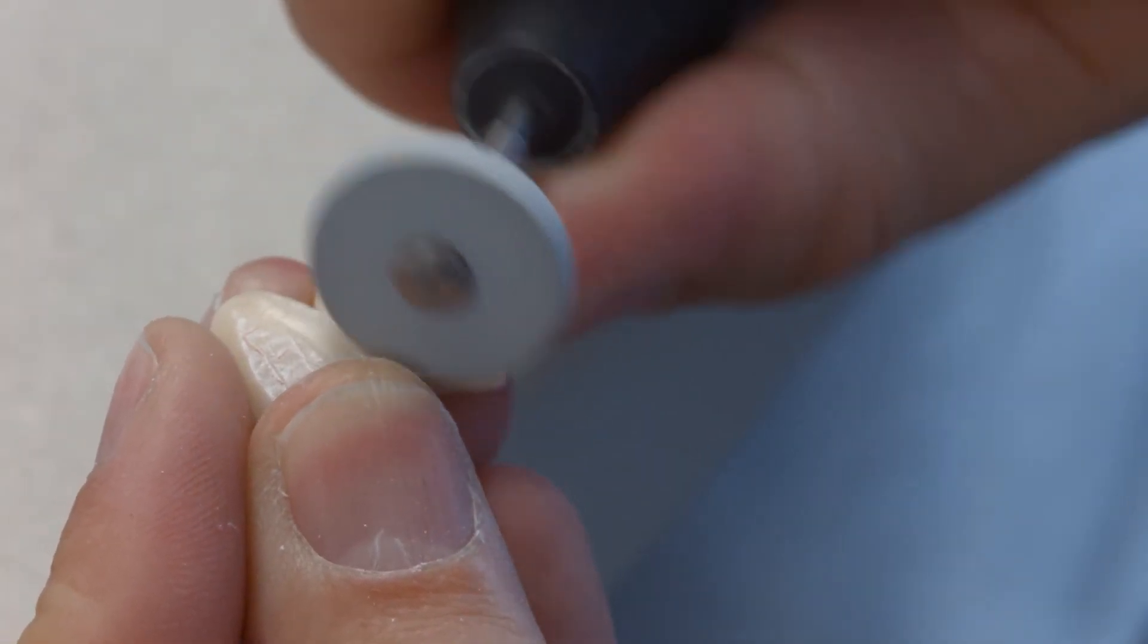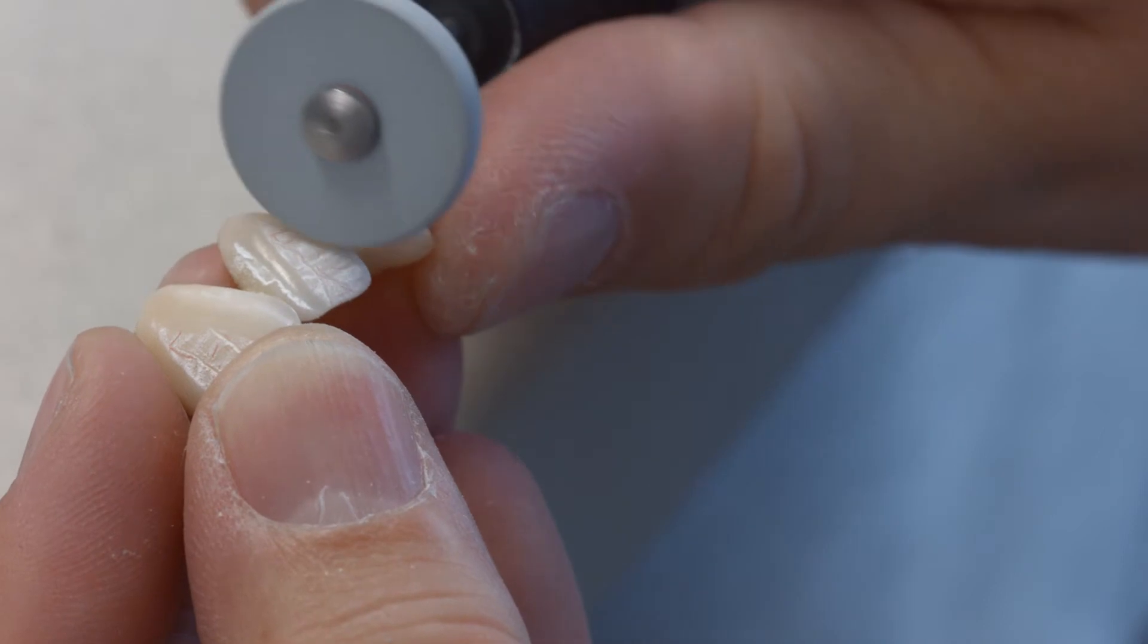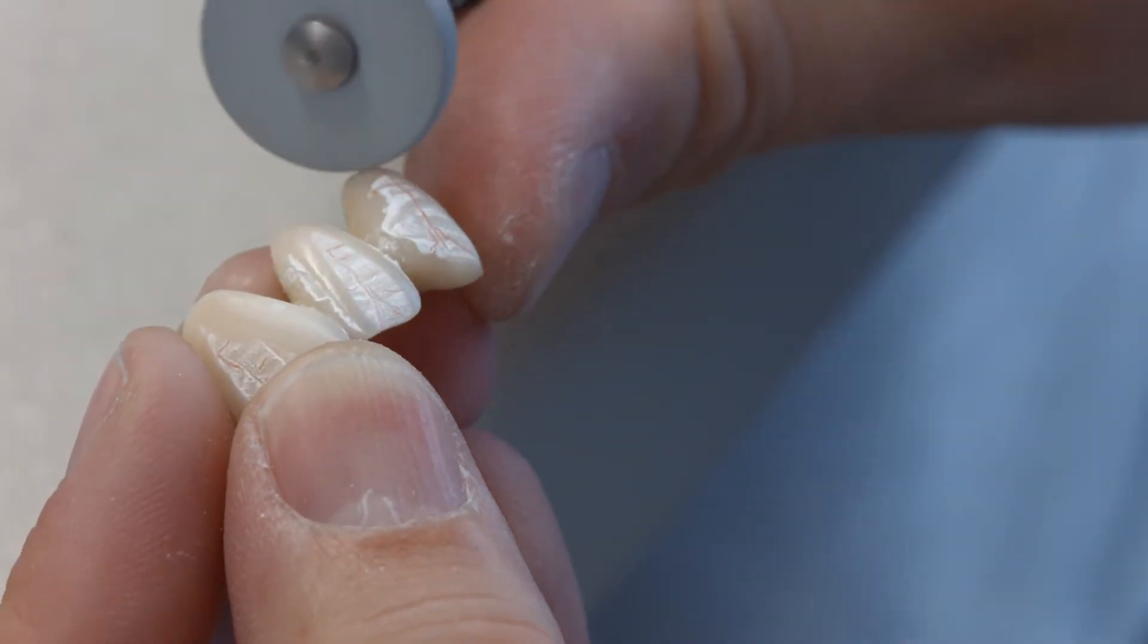Elevated spots and areas that are to show a stronger gloss after glaze firing can be pre-polished using silicone polishers.